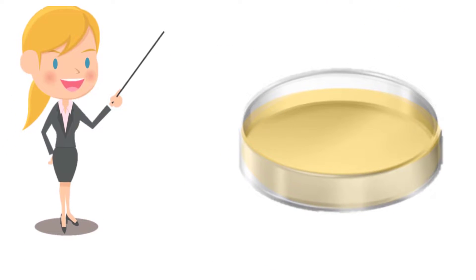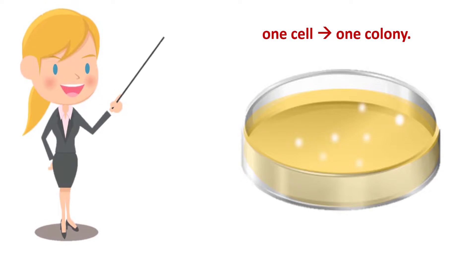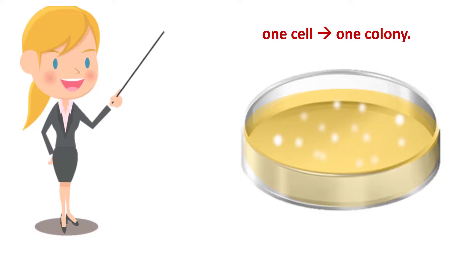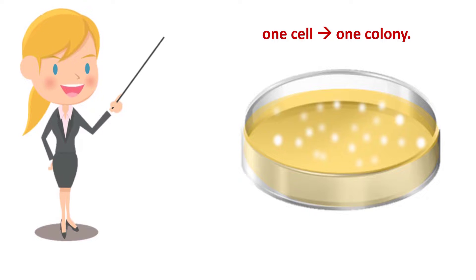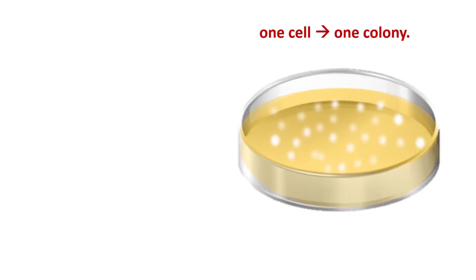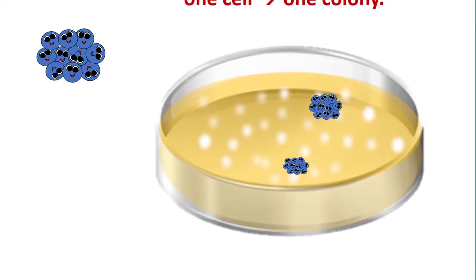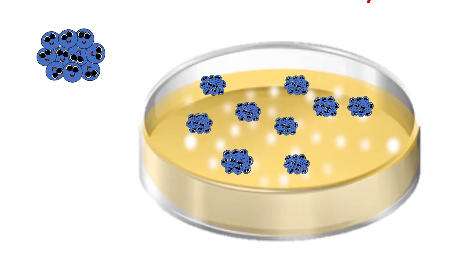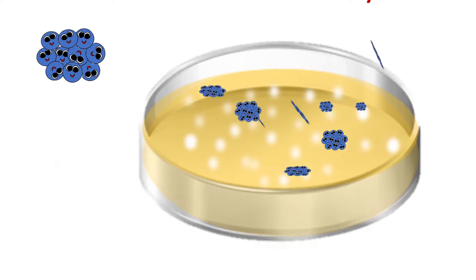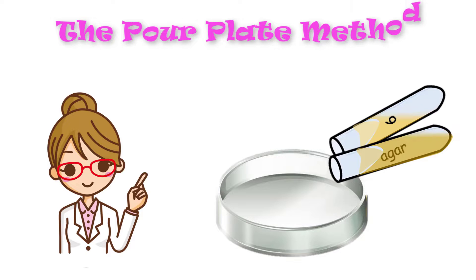The dish or plate will develop colonies following a time of incubation. After a given time for growth to occur, a successfully streaked plate will show progressively thinning colonies with completely isolated colonies. There is also the pour plate technique.